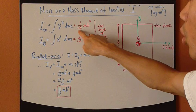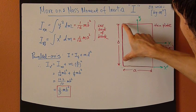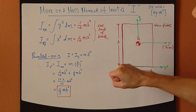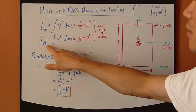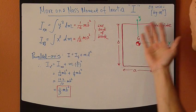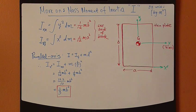It turns out to be 1/12 mb². Again, b is the height of the plate, the y-coordinate. And then moment inertia about the y-axis turns out to be 1/12 ma².